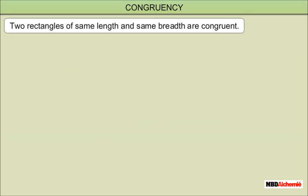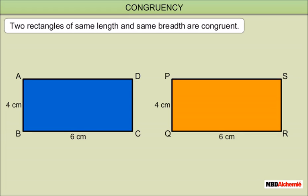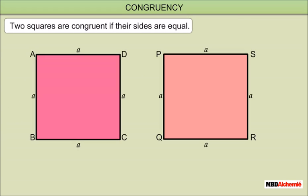Two rectangles of the same length and same breadth are congruent. Let the length of rectangle ABCD be 6 cm and its breadth 4 cm, and the length of rectangle PQRS be 6 cm and its breadth 4 cm. Two squares are congruent if their sides are equal — the squares shown here are of the same sides, thus they are congruent.